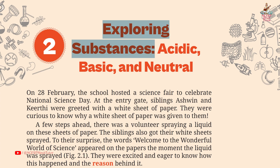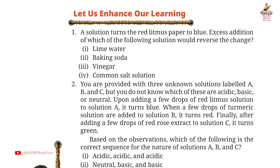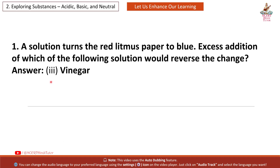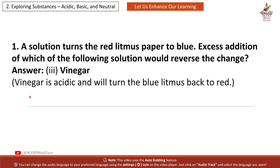Chapter 2: Exploring Substances - Acidic, Basic and Neutral. Question and Answers from Grade 7 Subject Science Book Curiosity. Let us enhance our learning. Question 1: A solution turns the red litmus paper to blue. Excess addition of which of the following solution would reverse the change? Answer: Vinegar. Vinegar is acidic and will turn the blue litmus back to red.